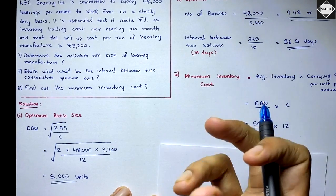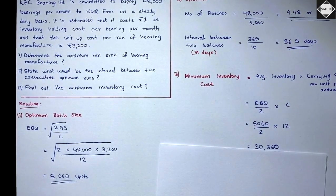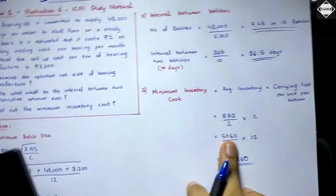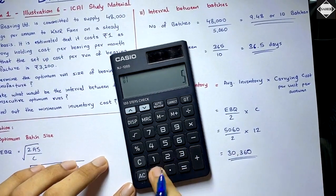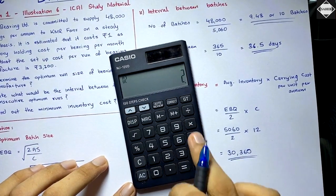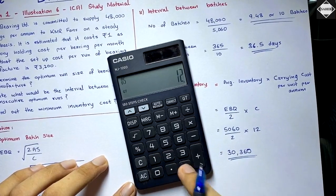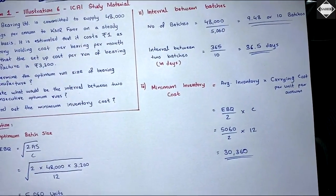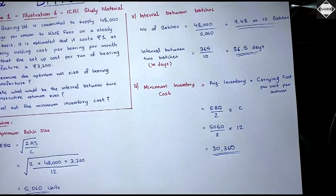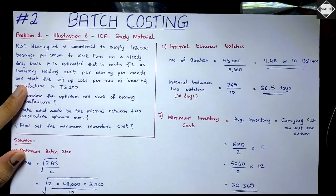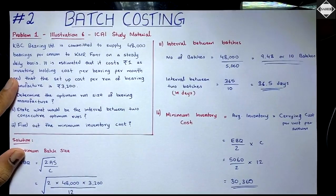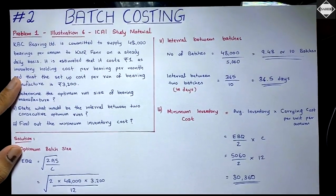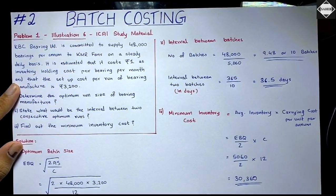That is the meaning of EBQ — at this batch size inventory cost is optimized and minimized. To summarize: average inventory = 5,060 ÷ 2, multiplied by ₹12, gives ₹30,360. This was a simple question on Economic Batch Quantity. If you have any doubts, please comment below. See you in the next video!